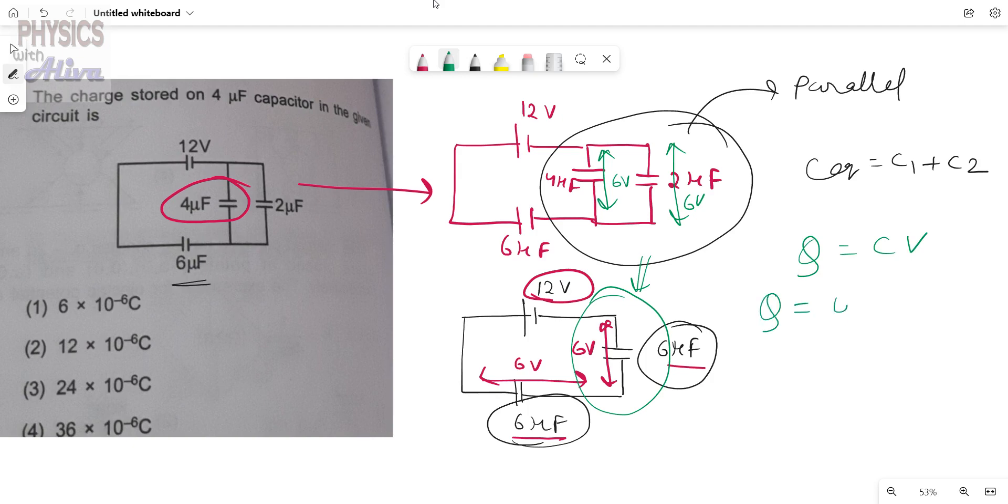So from here we can calculate the charge stored in the 4uF capacitor. That is 4 into 10 to the power minus 6F, and the potential is 6V. So the answer should be 24 into 10 to the power minus 6C.